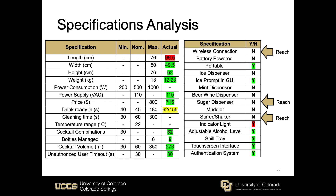In terms of quantitative specifications, the one we really did not meet was the overall length of the machine. This is because in the original design we only measured the length of the aluminum frame and didn't consider the placement of the Raspberry Pi, touch screen, or the hardware junction box. Since these are sitting next to the aluminum frame, they add about 20.5 centimeters, exceeding the overall projected maximum length.